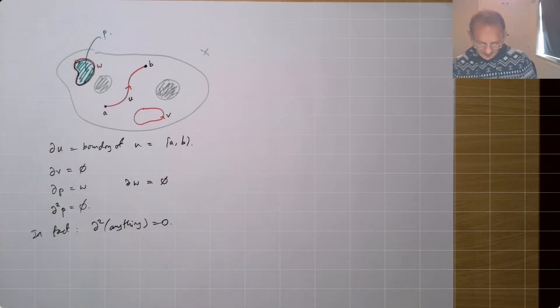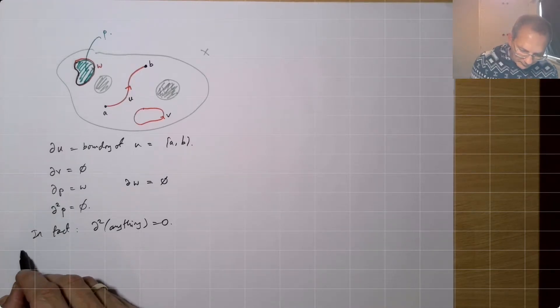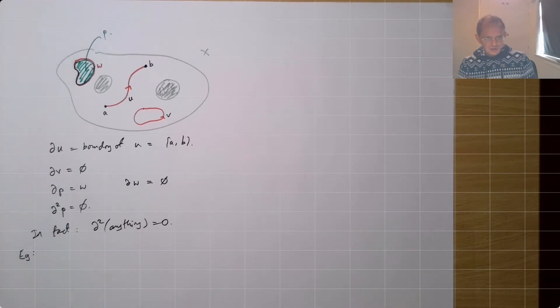So here I wrote empty, there I wrote zero. Well, I'm not saying anything sufficiently precise to really distinguish between those two things, but eventually we're going to make things into a group, an additive group, and zero will be the identity element in that group. So this is how it works out. D squared of anything is zero.